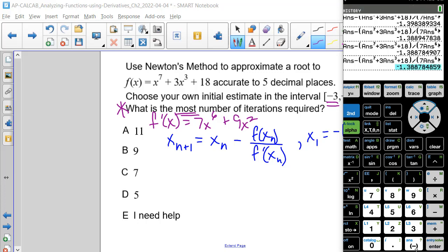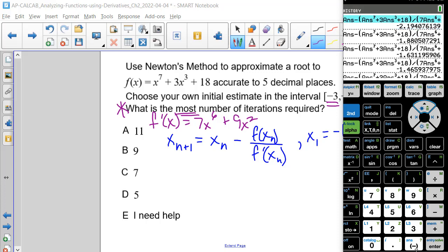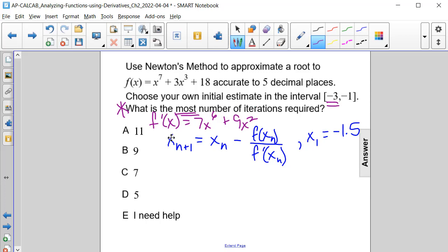All right, so we had 1, 2, 3, 4, 5, 6, 7, 8, 9. It was nine iterations because we started here. So we're at nine iterations for the most number required, or answer choice B.